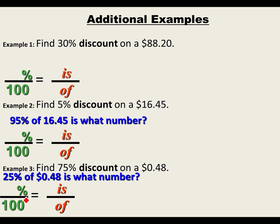Let's go ahead and try these practice problems. Find a 30% discount on an $88.20 item. Find a 5% discount on a $16.45 item. And find a 75% discount on something that costs 48 cents. Go ahead and pause the video and try these out on your own.